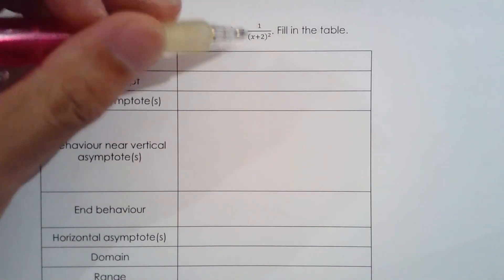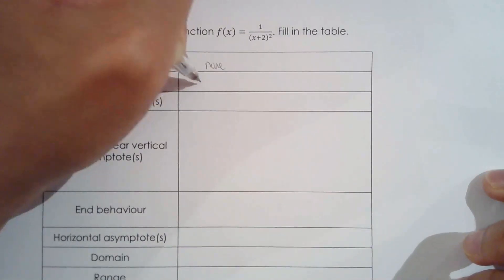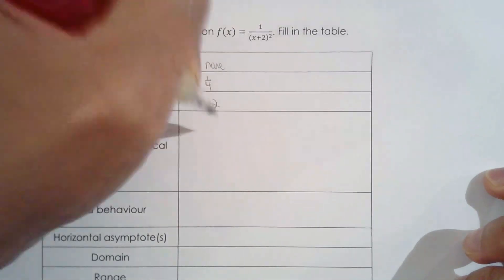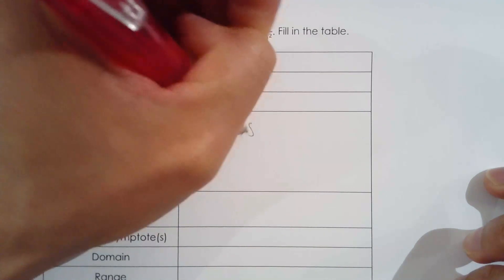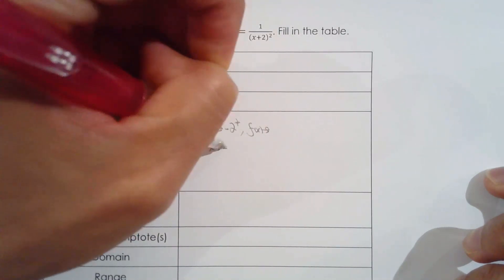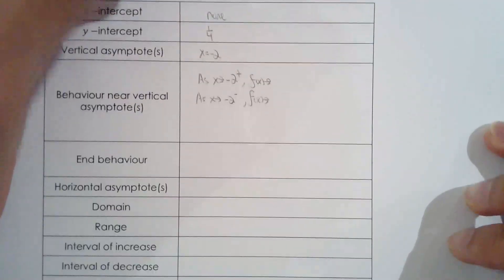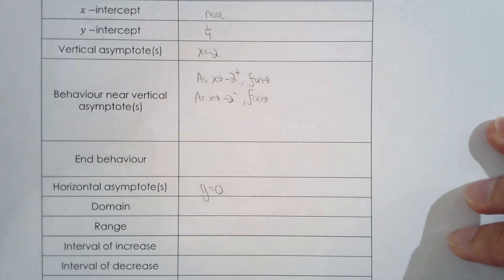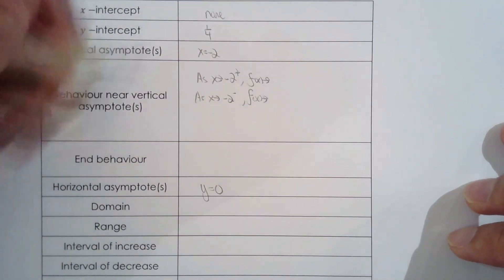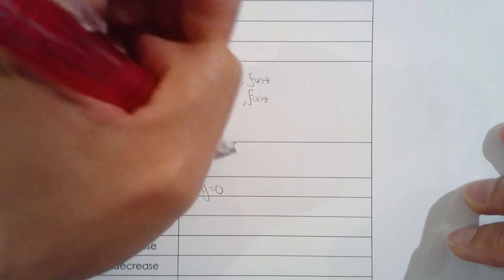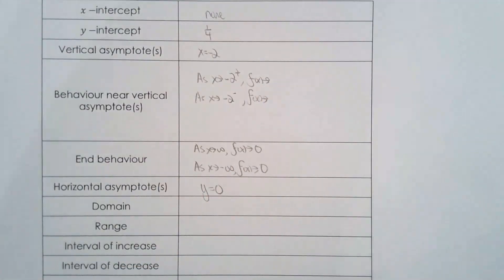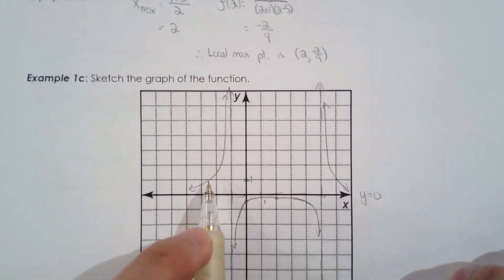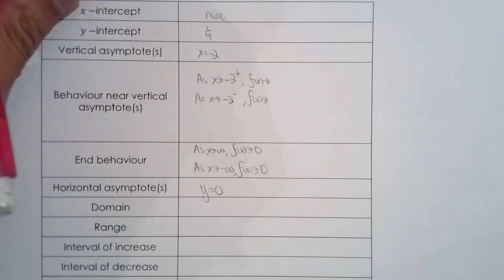Let's do another example. Once again, I'm thinking of that quadratic function. X-intercept: none. Y-intercept is 1 quarter. Vertical asymptote: x equals negative 2. As x approaches negative 2 from the right, what happens? From the left? For end behavior, I know the horizontal asymptote is y equals 0. As x approaches infinity and as x approaches negative infinity, f of x approaches 0. I'll fill everything else in once I have the graph.